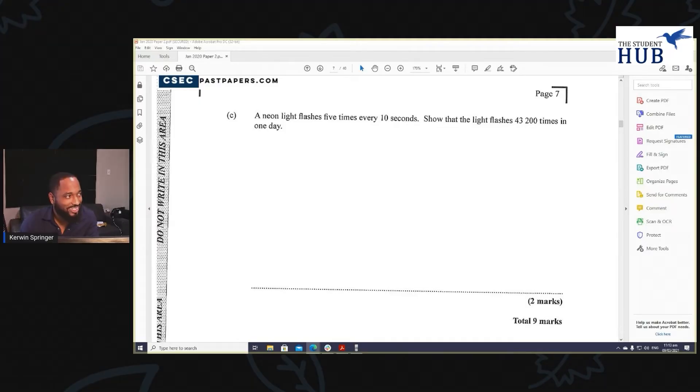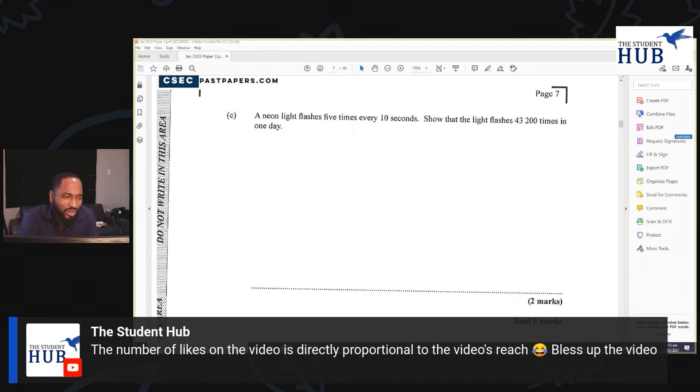A neon light flashes five times every 10 seconds. Show that the light flashes 43,200 times in one day. I love this comment: when students came out the exam with this question, everybody had a different way they do this question. Once you end up with the correct answer, you're good to go.